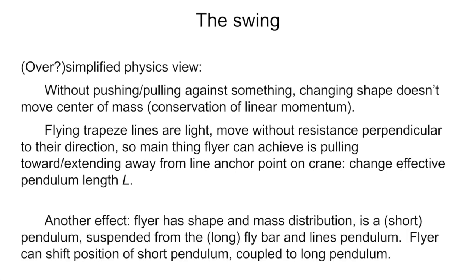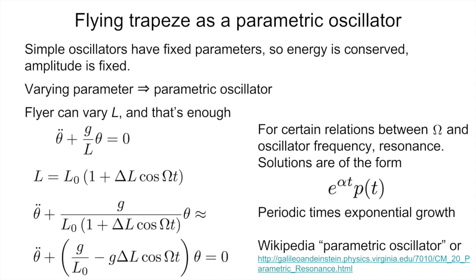There's also another effect: because the flyer has a shape and a mass distribution, you can think of it as a short pendulum suspended from the long overall pendulum consisting of the fly bar and lines. Because the flyer can change the shape of their body, they can shift the position of the short pendulum, and that's coupled to the long pendulum — forming a coupled pendulum system. I'm not going to focus on this effect explicitly; I'll focus on the variation in line length. Focusing on the length of the pendulum lines, we can regard the flying trapeze as what's called a parametric oscillator. The simple pendulum equation has a fixed parameter and conserved energy, fixed amplitude. As soon as you vary some parameter that controls the oscillator, you get a parametric oscillator — in this case, the flyer varies the length of the lines, and as I'll show you, that's enough to pump their swing.